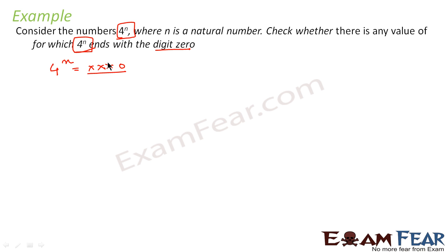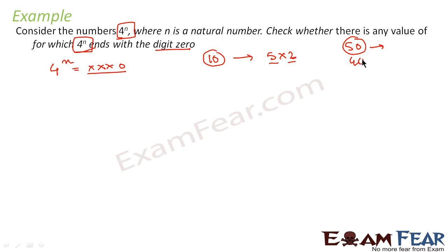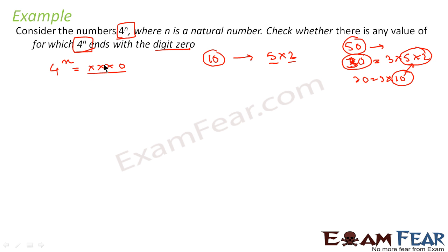We know that for any number to end with 0, that number must be a multiple of 10. If it is a multiple of 10, then 5 and 2 must both be factors of that number. For example, 30 is a multiple of 10, so 30 has factors 5 and 2 — because 30 is 3 into 10, and 10 is 5 into 2. So if any number ends with 0, then 10 is a factor, which means 5 and 2 are also factors.